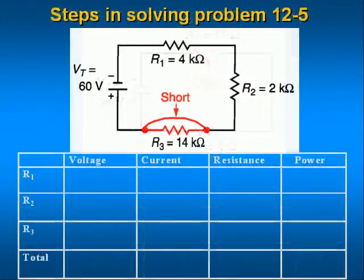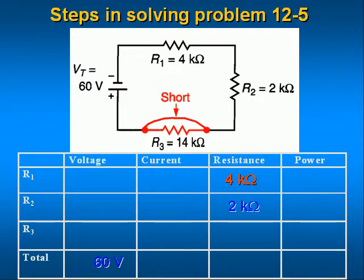Here is a series circuit with a shorted resistor R3 that has a resistive value of zero ohms. Enter the data that you know: the total voltage is 60 volts, R1 equals 4000 ohms, R2 equals 2000 ohms, and R3 equals zero ohms. Then compute the total resistance by adding R1 plus R2 plus R3 equals 4000 plus 2000 plus zero equals 6000 ohms or 6k ohms.